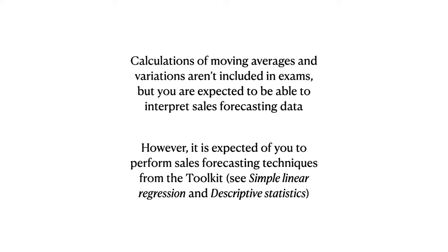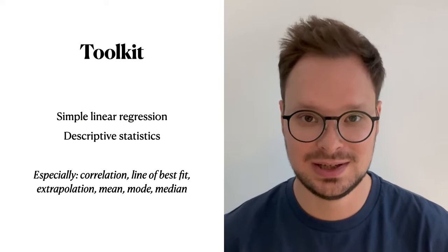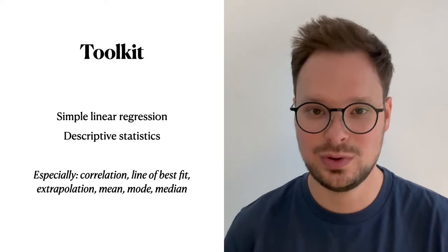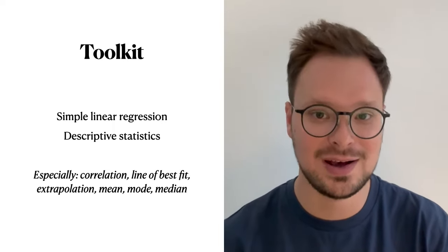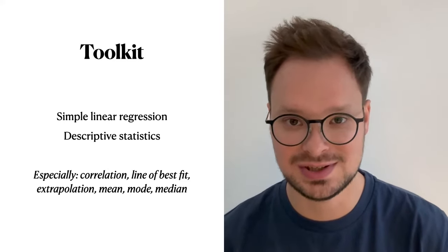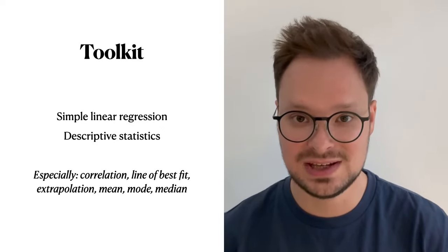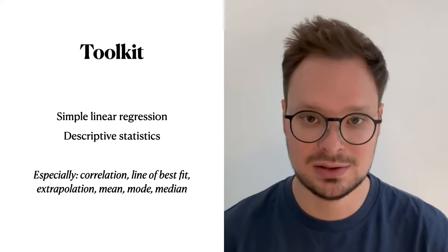This does not apply to what is in the business toolkit. Those tools you are expected not only to understand and interpret, but also to calculate and perform. The two business tools from the IB Business Management Toolkit that refer to sales forecasting are simple linear regression and descriptive statistics. Within each tool there is a set of other tools – those you should pay particular attention to are extrapolation, line of best fit, correlation, and averages: mean, mode, and median.